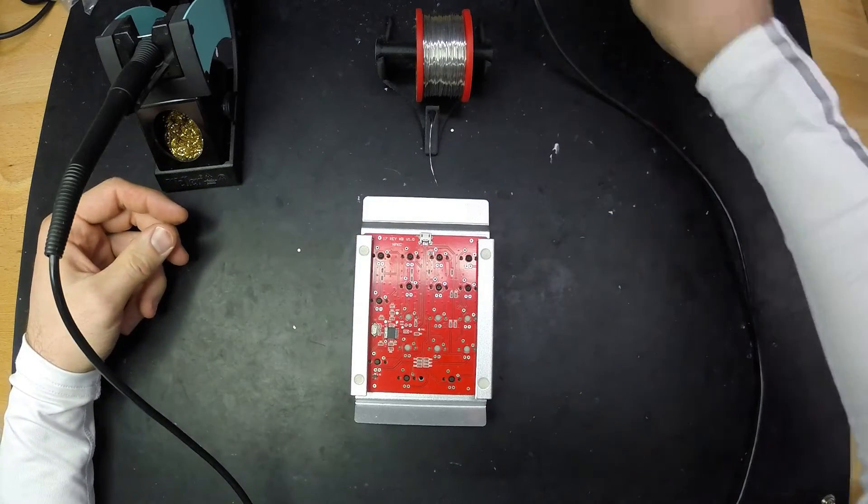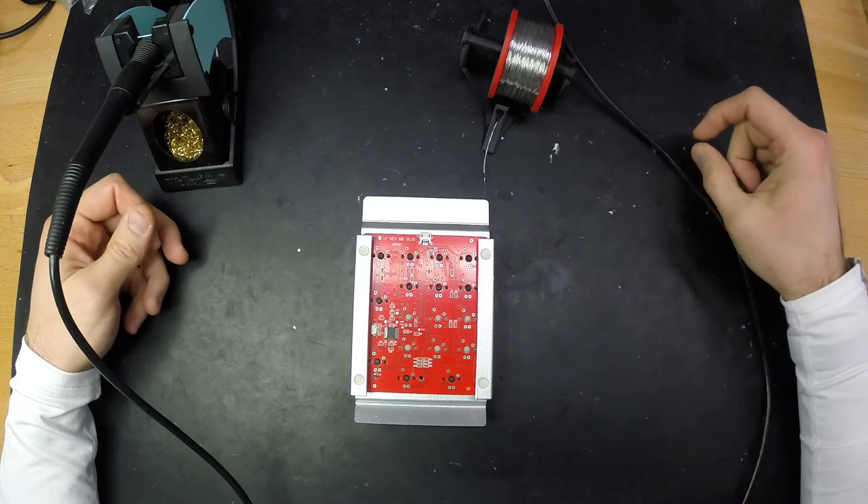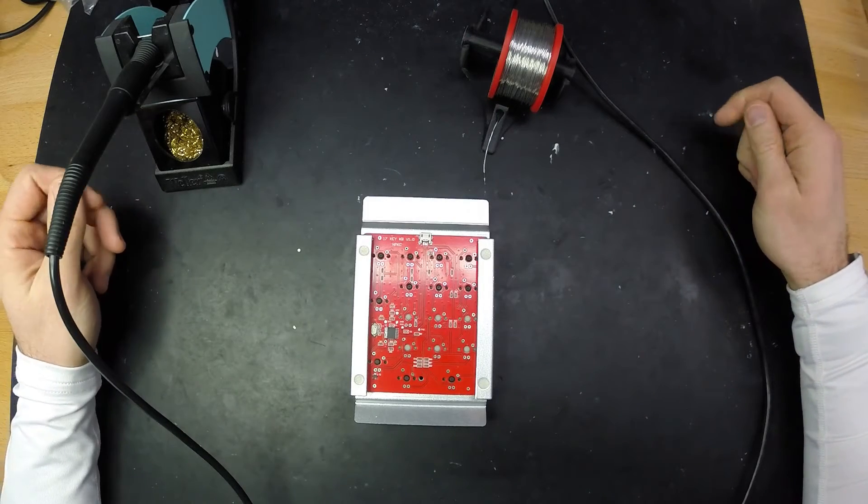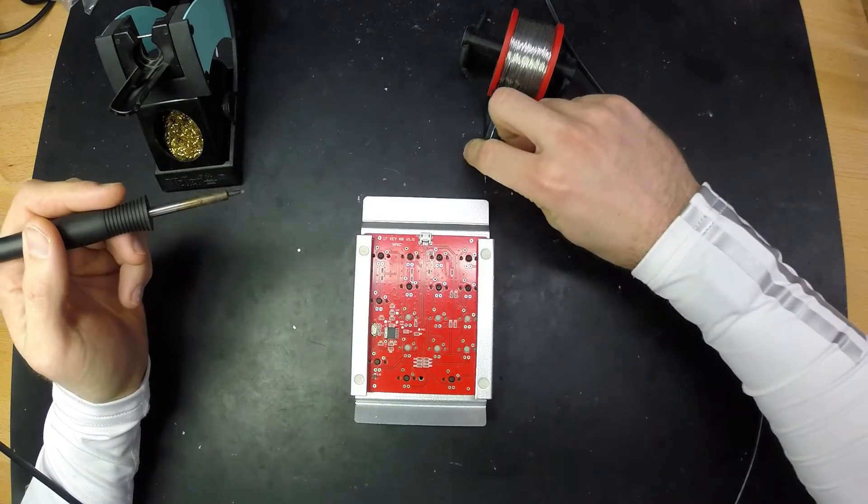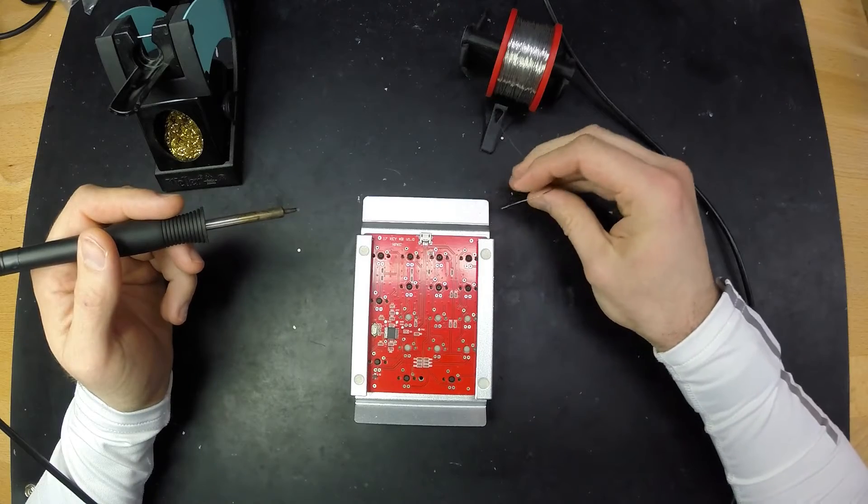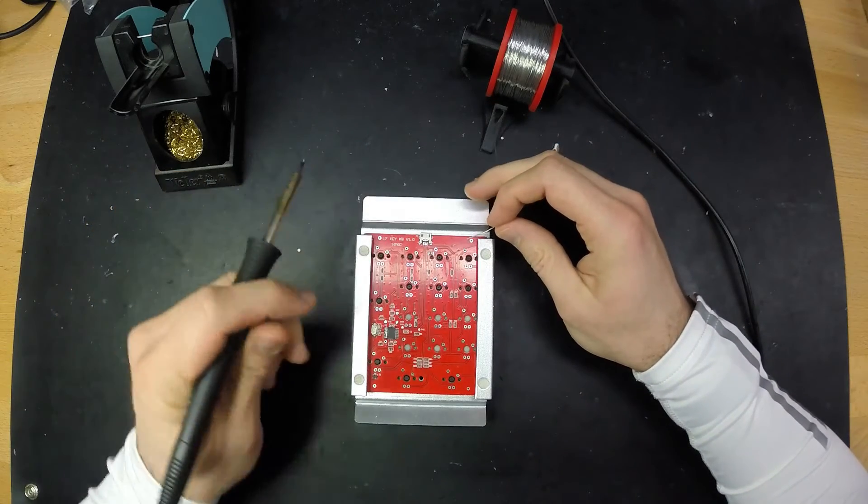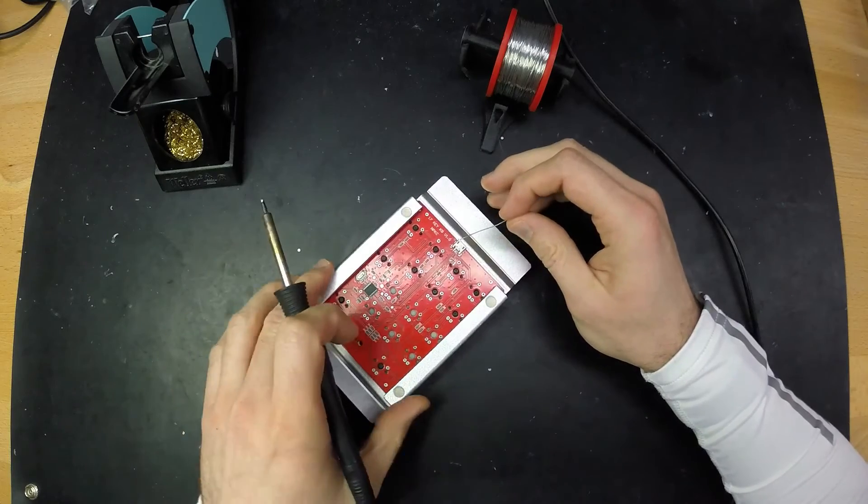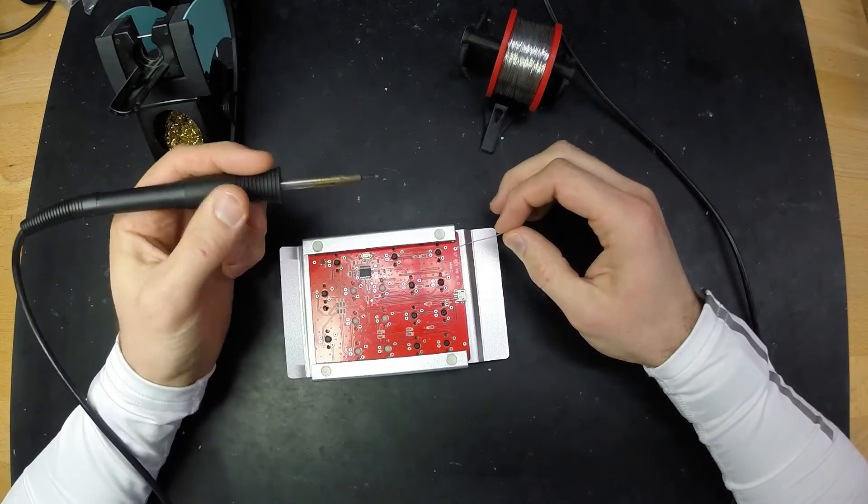I've heated up my soldering station to 325 degrees Celsius. I've got some very thin solder here, it's got a flux core and it's got some lead in there. But since I'm a private person I'm allowed to use solder with lead. Anyway, let's get started.